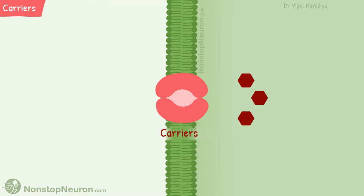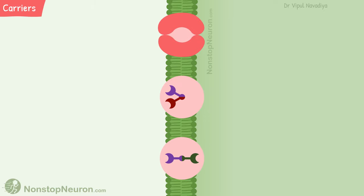Because of this lengthy process, the rate of transport through a carrier is lower than through channels. Carriers can be of three types: uniporters, symporters, and antiporters.